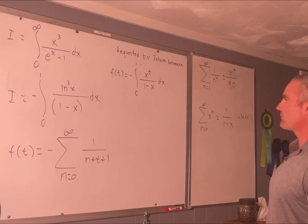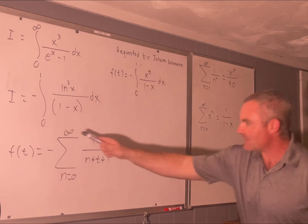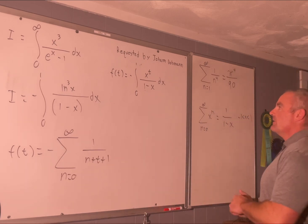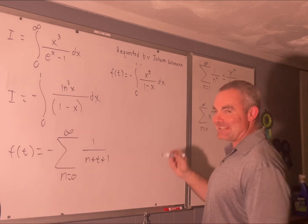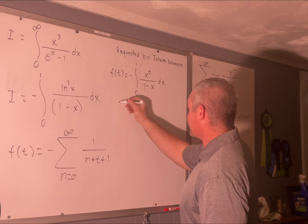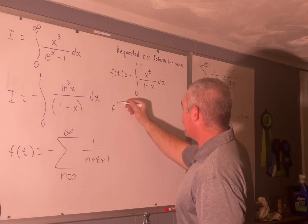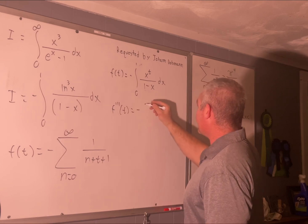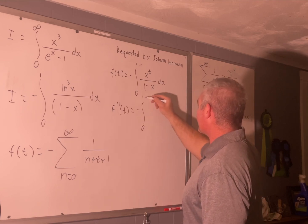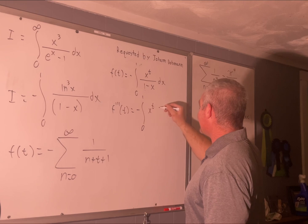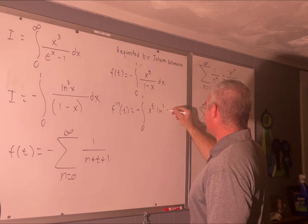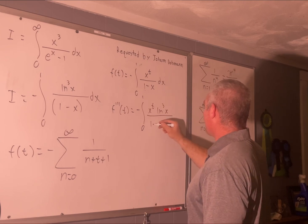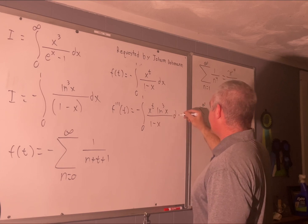And then we'll use Fubini's theorem to switch the summation and integration notations. So we have, this is just going to be the integral from 0 to 1, and this is negative sum from 0 to infinity. Evaluating that integral right here will give us 1 over n plus t plus 1. 1 over n plus t plus 1. Okay. So now we have two different expressions for f of t. All right. Let's take three derivatives of each of these with respect to t.